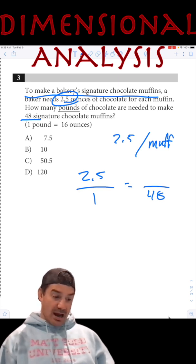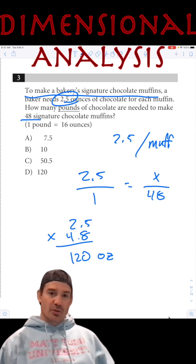Well, how many ounces are we going to have here? So it's going to be 2.5 times 48. Boom. 120 ounces.